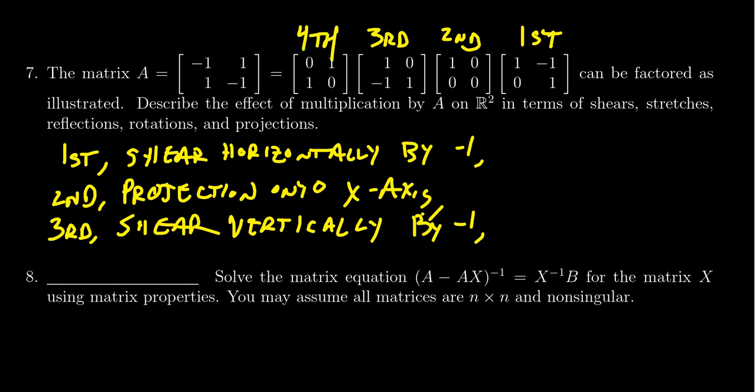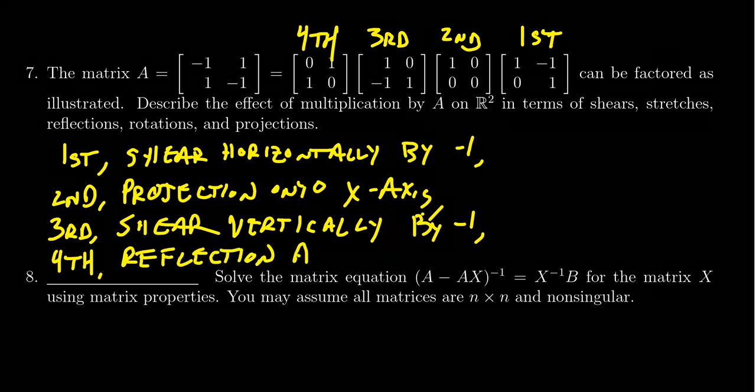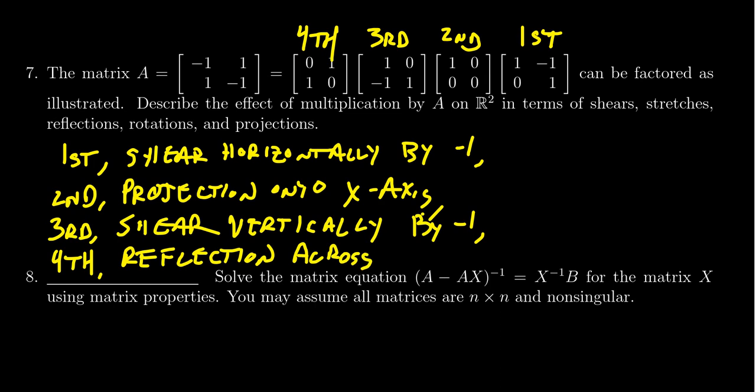The last one is the interchange matrix: 0, 1, 1, 0. What this does is reflection across the diagonal line y equals x.